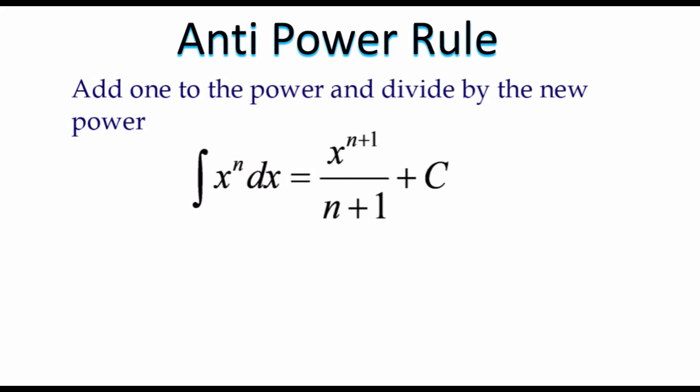This video is all about using the anti-power rule. Let's go ahead and refresh our memory on how we found derivatives. If I gave you f equal to 4x to the 3rd power plus 5x plus 7 and you take the derivative using the power rule,